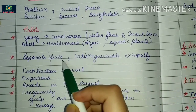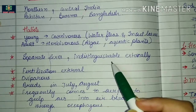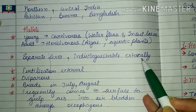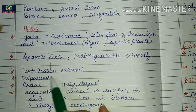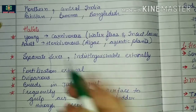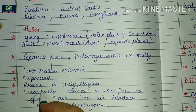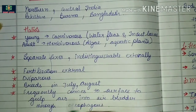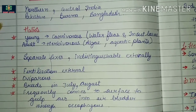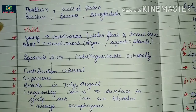They are unisexual. Sexes are indistinguishable externally. Fertilization is external. They are oviparous — egg-laying animals. They breed in July and August. They frequently come to the surface to gulp air into the air bladder through the esophagus.